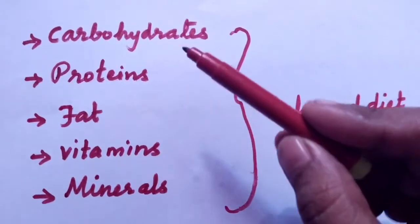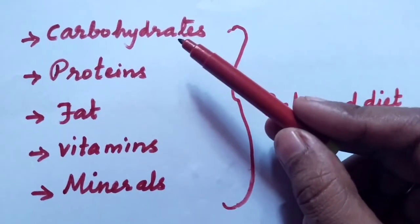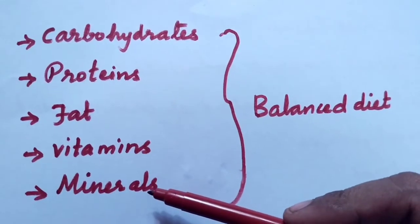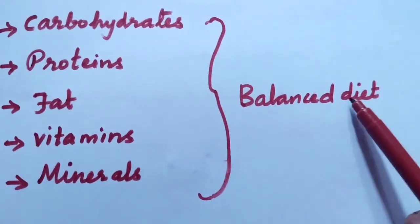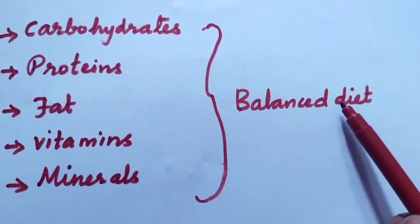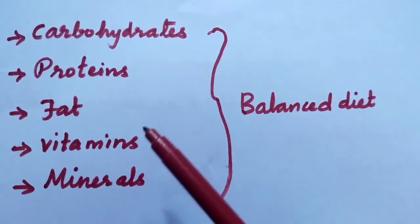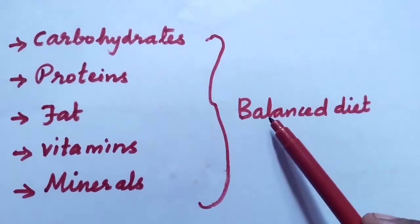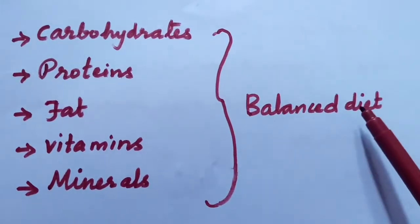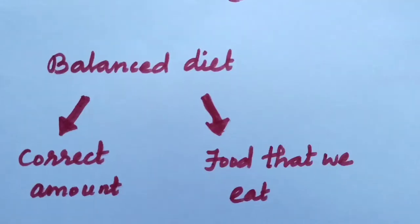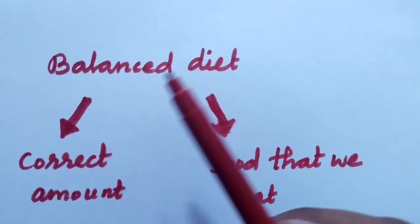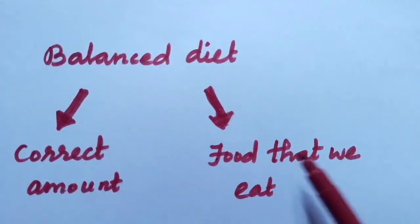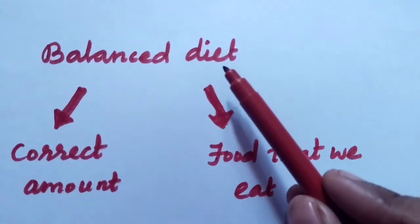Students, a food containing all these five nutrients — carbohydrates, proteins, fat, vitamins, and minerals — in the correct amount is called a balanced diet. What is a balanced diet? A diet or food containing all these five nutrients in the correct amount is called a balanced diet. Now let's learn about the balanced diet. Diet means the food items that we eat, so food that we eat is called a diet.